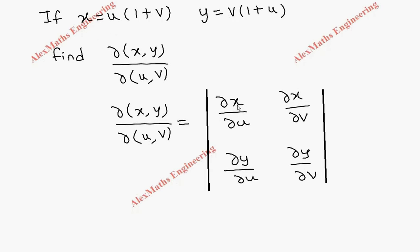The first term is the partial differentiation of x with respect to u. v is constant, so the u differentiation is 1, and (1+v) stays as is. Then ∂x/∂v is the partial differentiation of x with respect to v. Here u is constant, so we keep u as is.